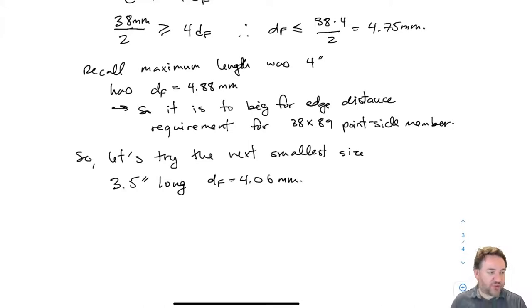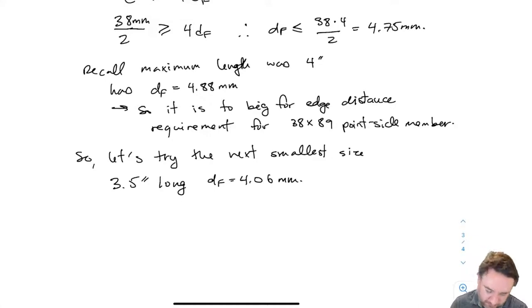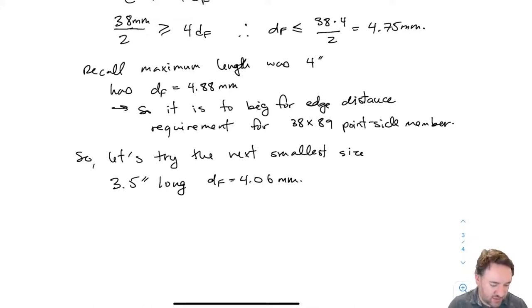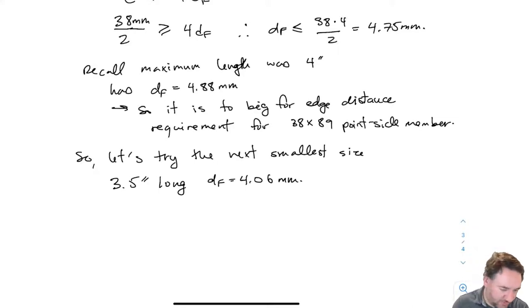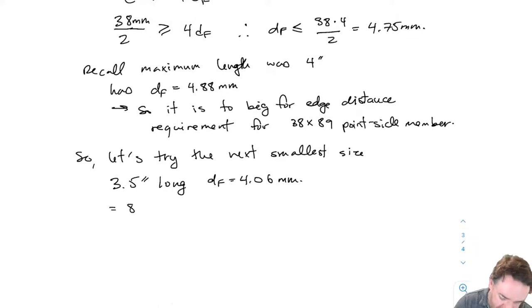So we're trying the 3.5-inch long nail with DF of 4.06mm — these are pretty sizable nails. If we're going for fewer nails, this is the way to do it, though we should note that having nails bend provides ductility. We'll proceed with this selection. A 3.5-inch nail equals 89 millimeters long.